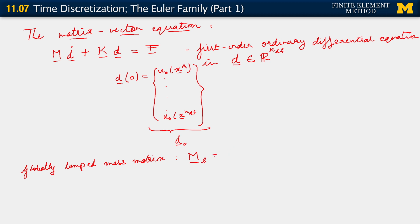It can be defined as follows. The way we do that is to simply say that M AB lumped is equal to the sum over C of M AC, if A equals B.